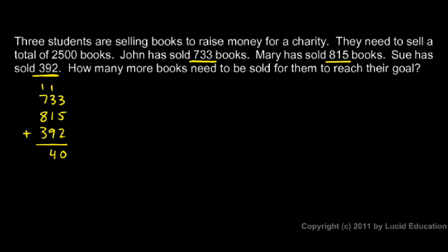And then in the last column, I see my 7 and 3 add up to 10. 10 plus the 8 is 18, plus that 1 is 19. So I have 1940. 1,940 books are sold so far.